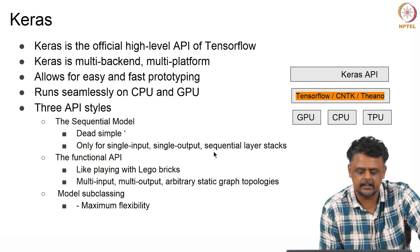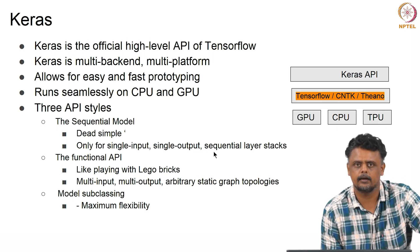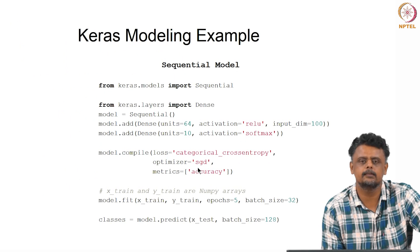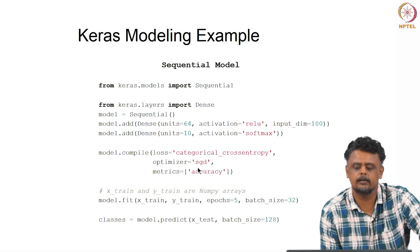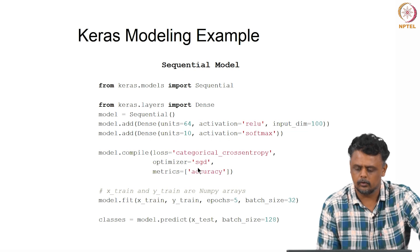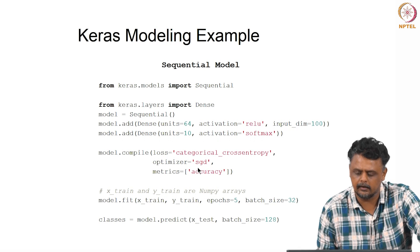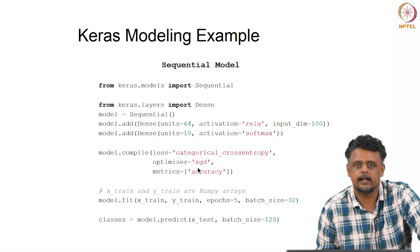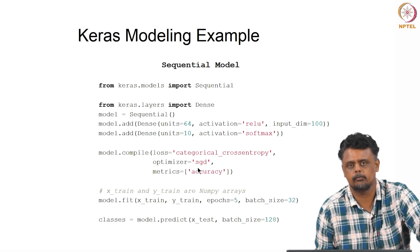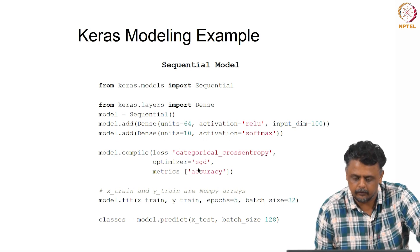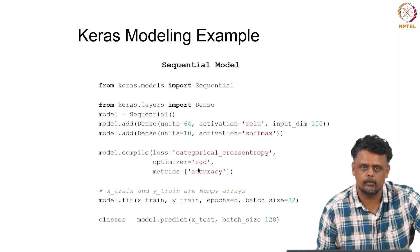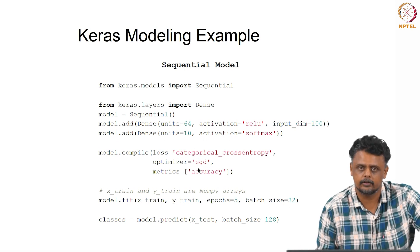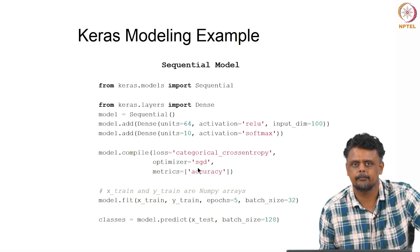Keras provides a functional API where you can call functions at different points in the code and move them around like Lego bricks. For instance, here is a very simple script for implementing a typical sequential model neural network. It is accomplished in a very short piece of code. Even a very complicated deep learning model can be implemented in very few lines of code and it is very transparent. This is one of the reasons why you would need some of these packages.